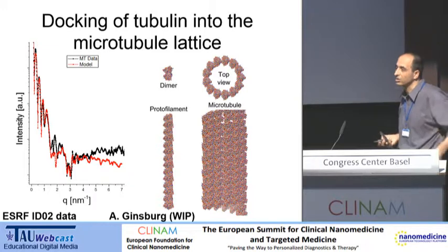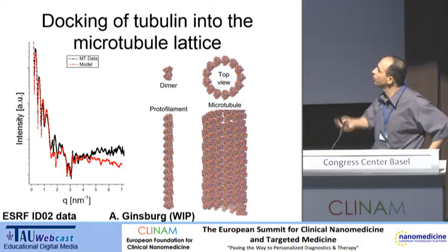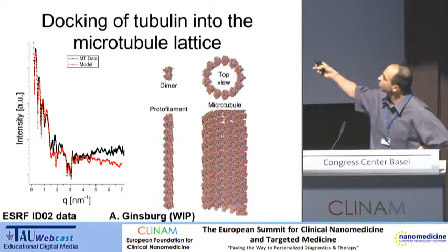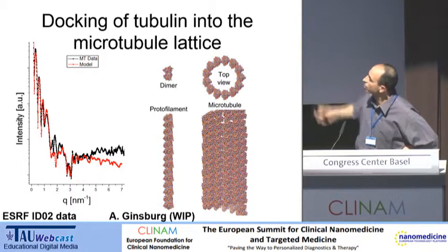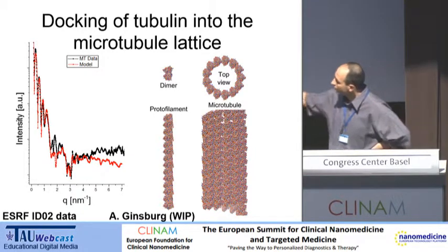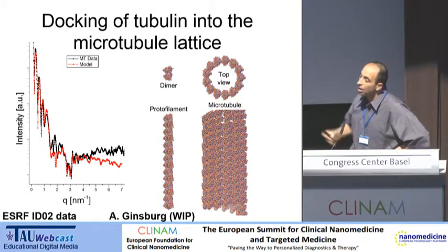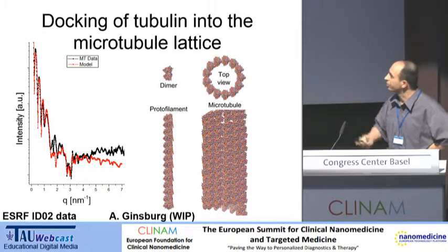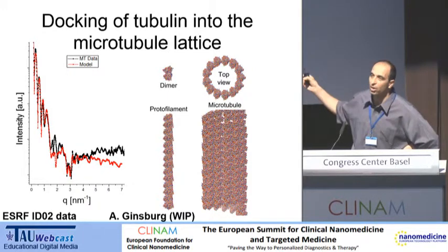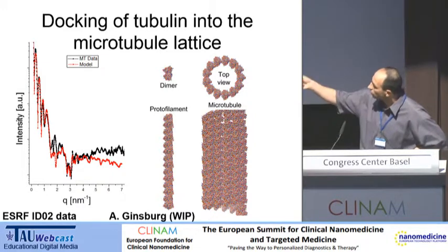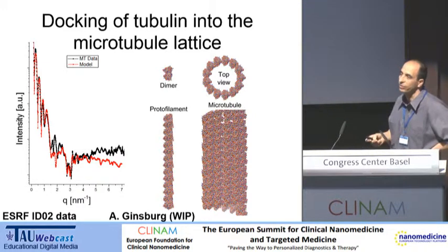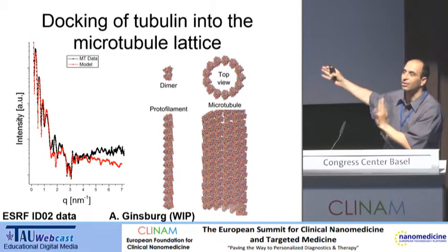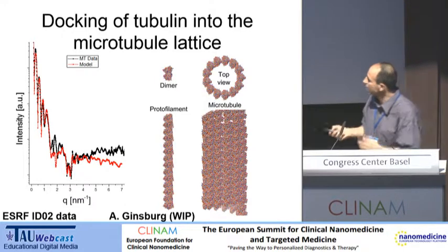To better resolve the structure, we docked the crystallography structure of the tubulin dimer into the lattice of the microtubule. The data shown with black symbols is high-resolution data taken with a lot of effort, with resolution below one nanometer, a few angstrom resolution. The model corresponds to what you see on the right. It's still work in progress, but you can see many more features that we can account for with this approach.